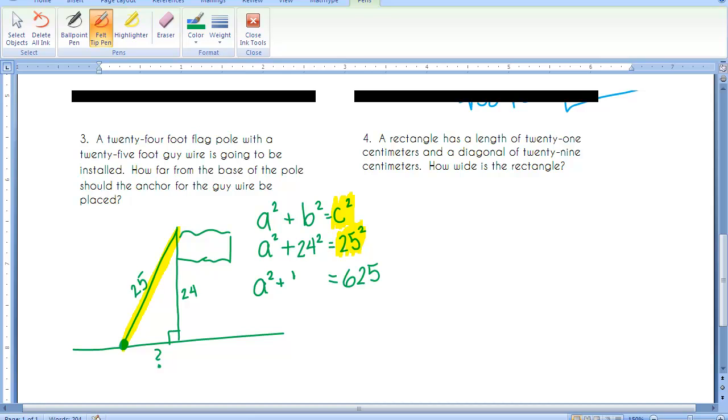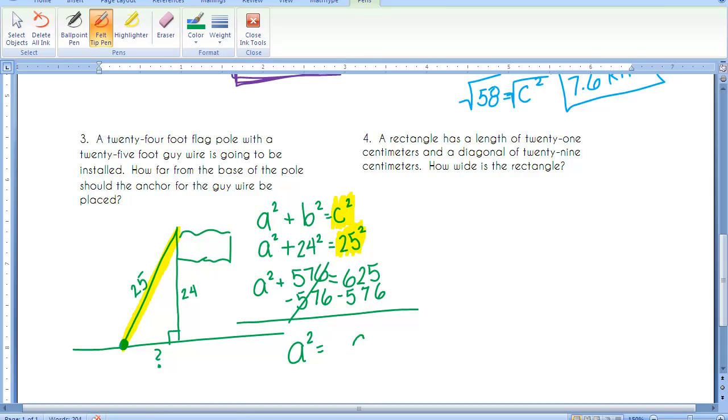So A squared plus 576. Because we're looking for one of the legs in this one, we have one extra step where we're going to have to get the A squared all by itself. So we're going to have to subtract. We get A squared equals, 15 minus 6 is 9, and 11 minus 7 is 4. Aha! We have a nice perfect square there. So A equals 7.